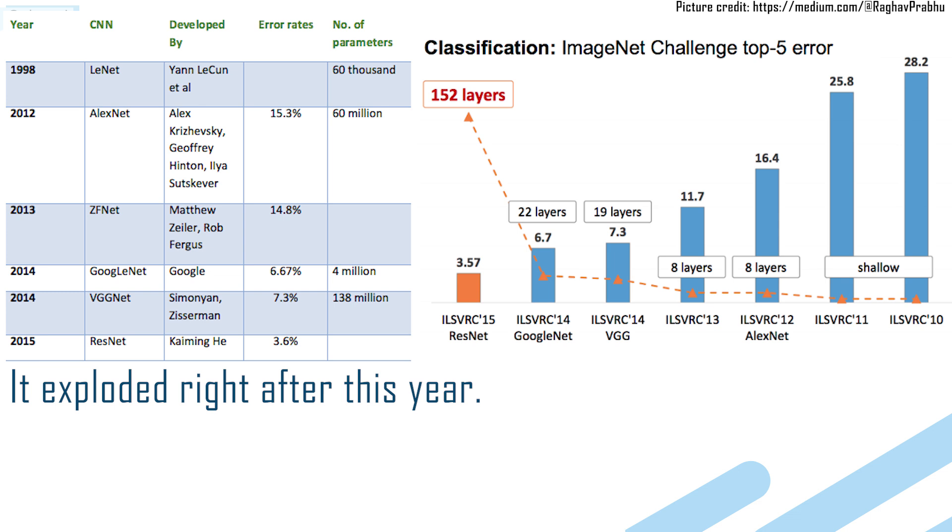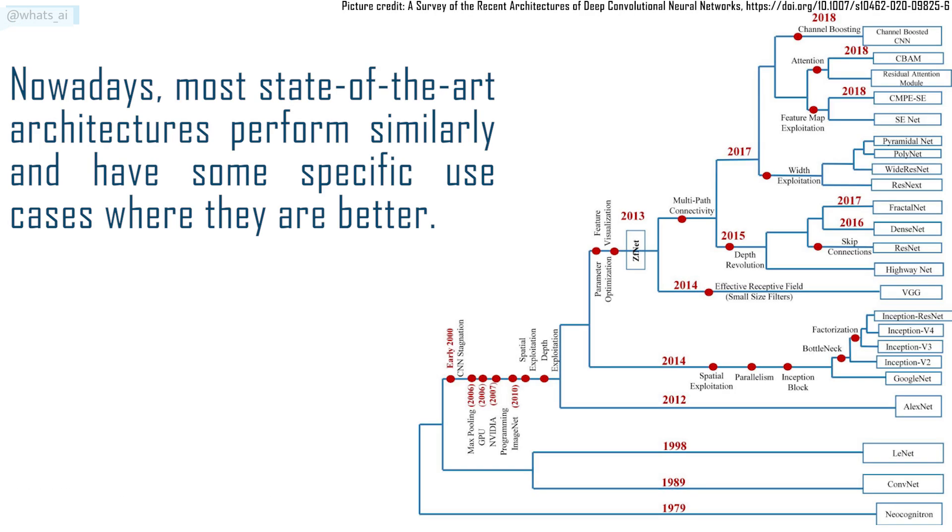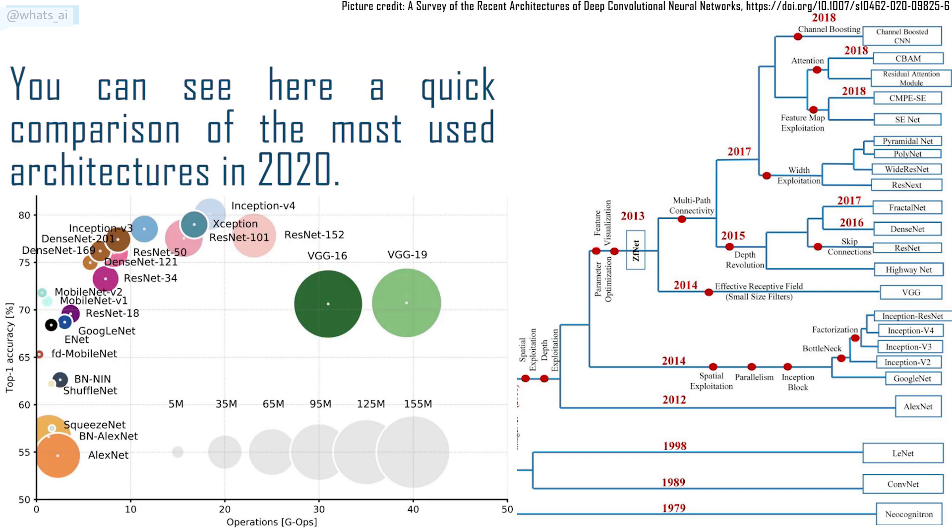It exploded right after this year, where new architectures were beating the precedent one and always performing better, until today. Nowadays, most state-of-the-art architectures perform similarly and have some specific use cases where they are better. You can see here a quick comparison of the most used architectures in 2020.